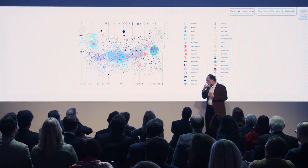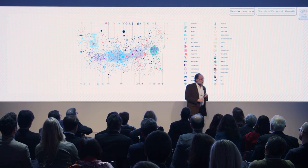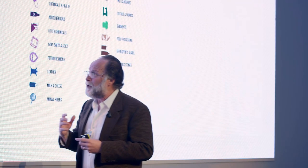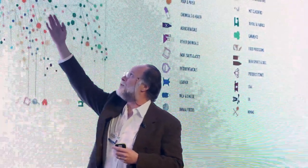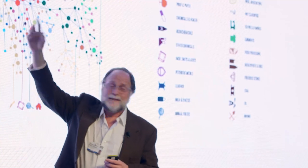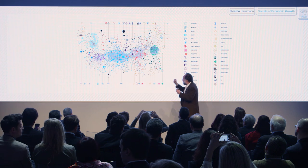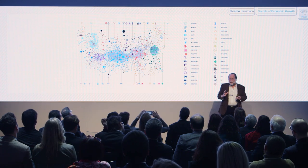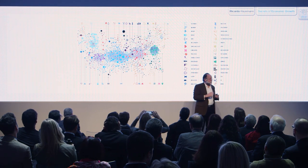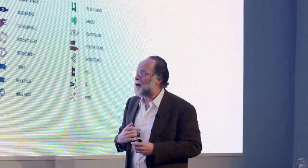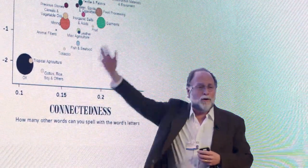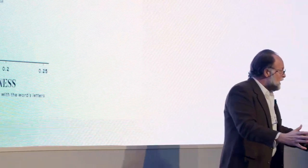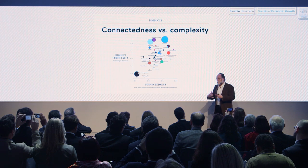We were able to map this forest in what we call the product space. Every product is like a circle, sized according to world trade, and connected to other products that use similar cognitive skills, similar capabilities. You see very quickly there are some dense parts of the forest: machinery, construction materials, garments and textiles, chemicals, electronics — they put themselves there. But there are also very sparse parts. For example, the big black blob up there is oil: it's big, but it's disconnected. Machinery, in contrast, is very much connected to other things. Products differ in how many letters they use and in how connected those products are — how much you could use one word's letters to make other words.